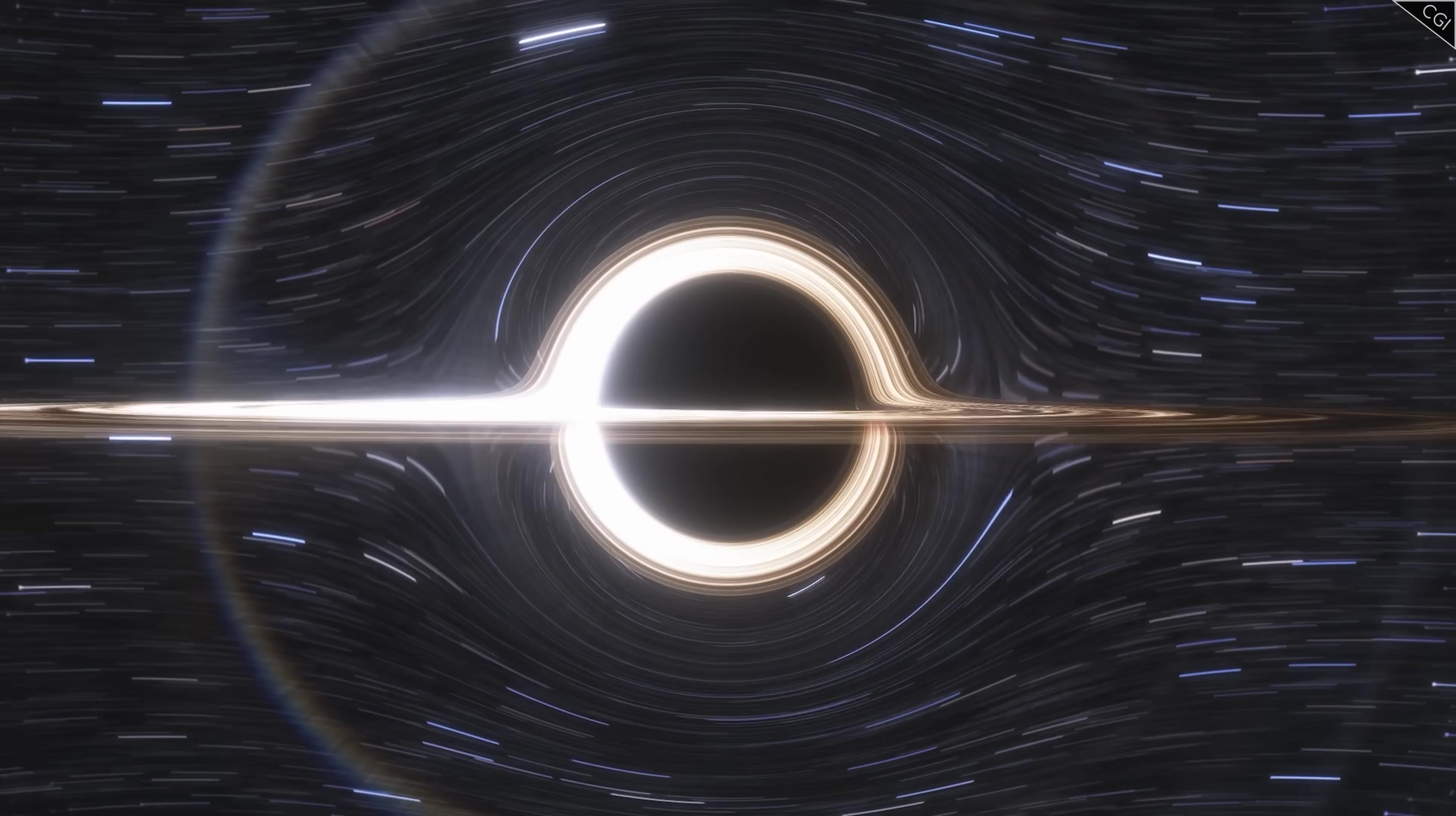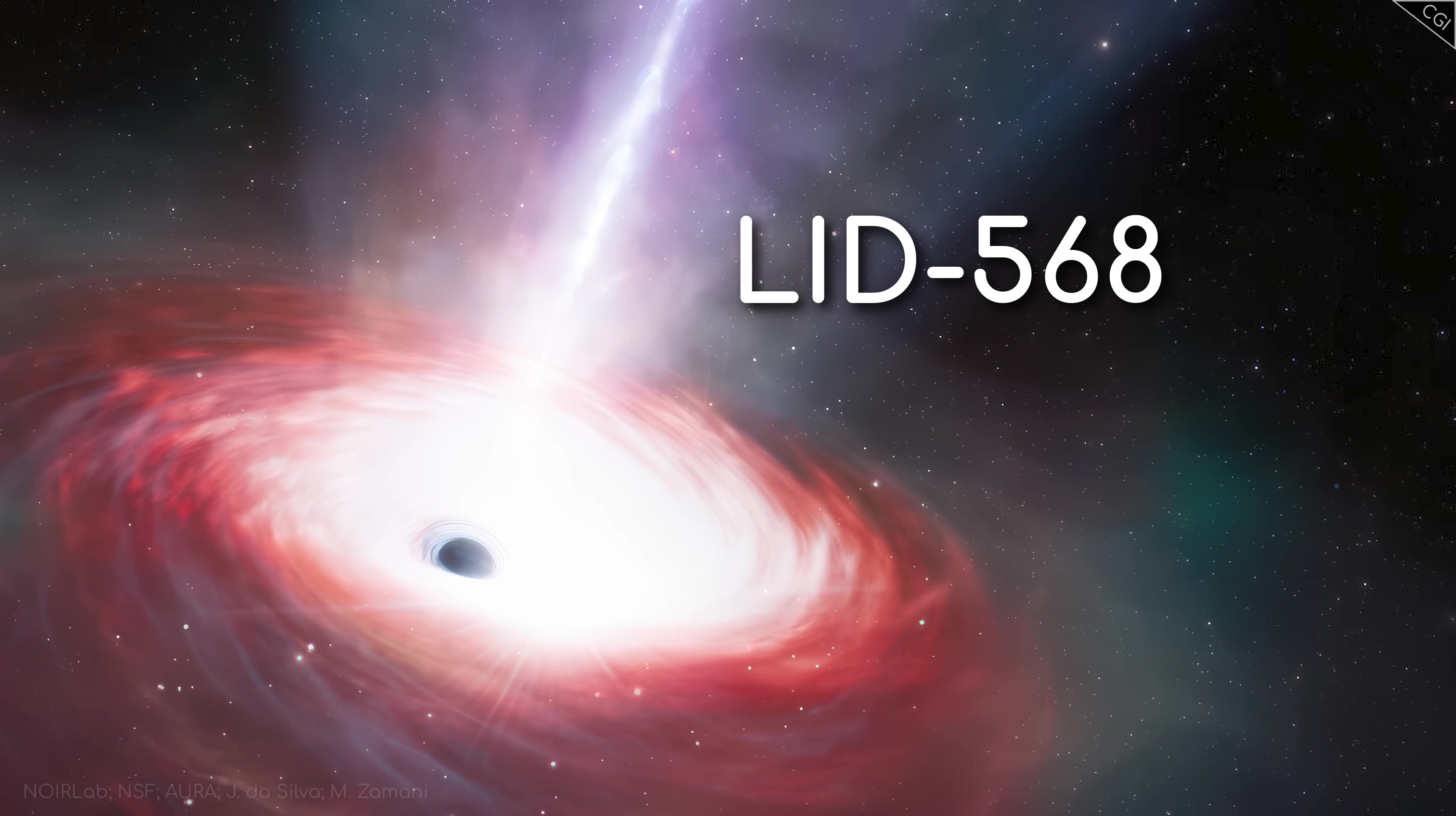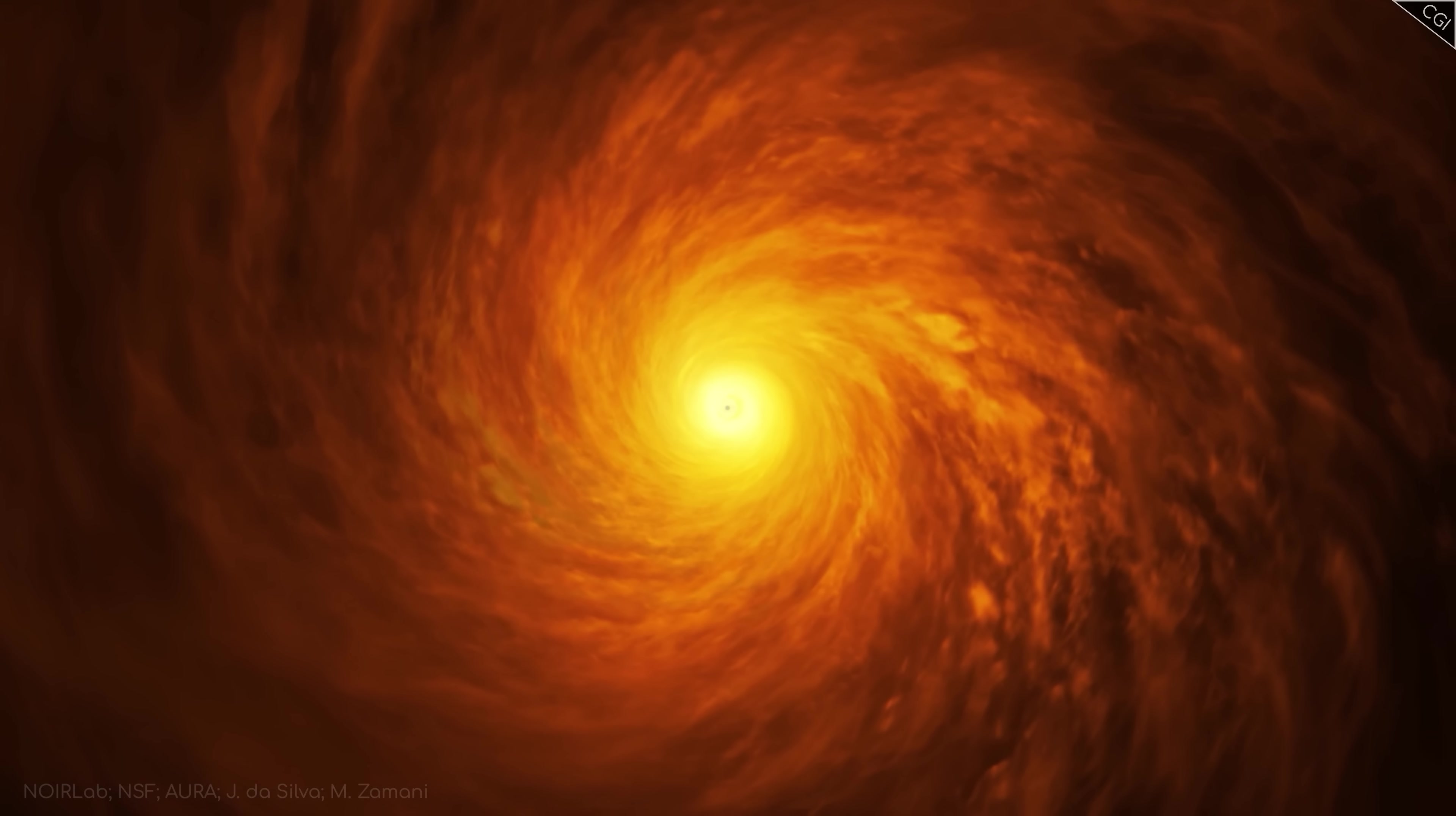But in a strange twist, one of the most resilient mysteries in all of this might be about to unravel, thanks to a black hole with an impossibly big appetite. Its name is LID 568. And we've just seen it breaking the Eddington limit, consuming matter faster than it should be able to. And it might just be the key to everything.